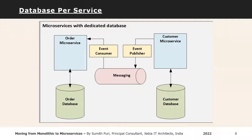Once we have database per service, the next problem we're going to work towards is messaging. We solved the order-customer monolithic architecture by splitting it into two microservices with a database per service. Now we know we are having sync issues, so we are going to have a messaging infrastructure.